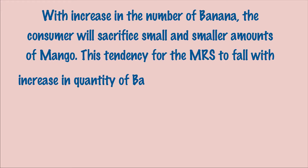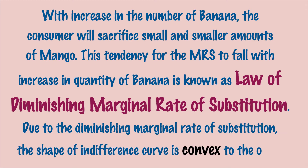In other words, with an increase in the number of bananas, the consumer will feel the inclination to sacrifice smaller and smaller amounts of mango. This tendency for the marginal rate of substitution to fall with increase in quantity of banana is known as the law of diminishing marginal rate of substitution. Due to the diminishing marginal rate of substitution, the shape of the indifference curve is convex to the origin.